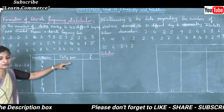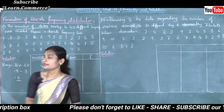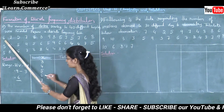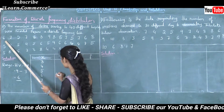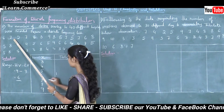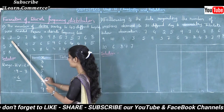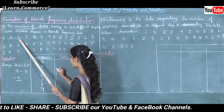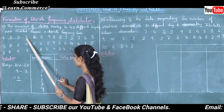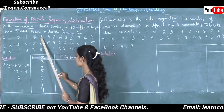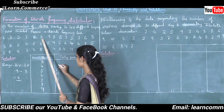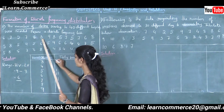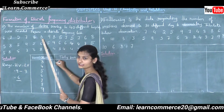Now, how to put tally marks? See the first observation, that is 6. So in front of 6, I will put one tally mark. Next is 7, so in front of 7 I will put a tally mark. Next is 5, next is 7, next is 6, next is 3. So in front of 3, one tally mark. Next is 9, next is 8.